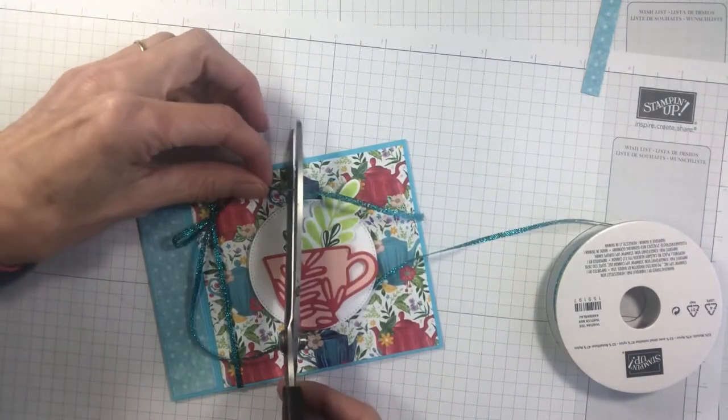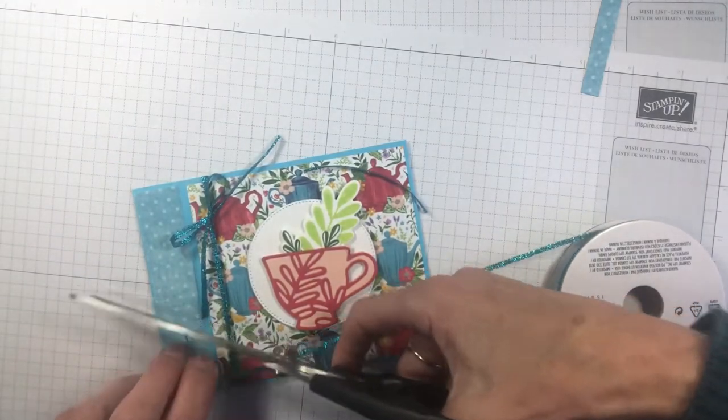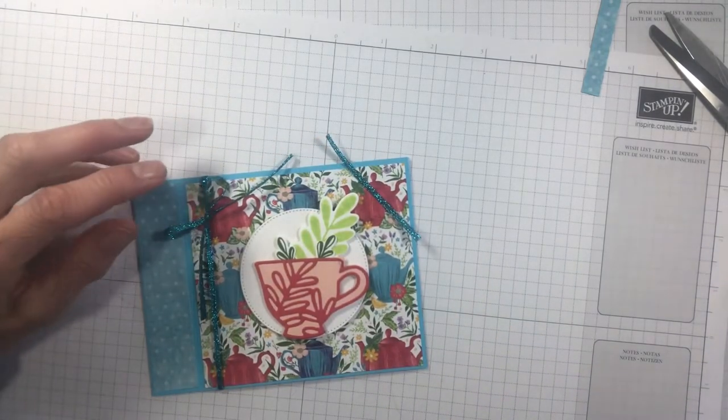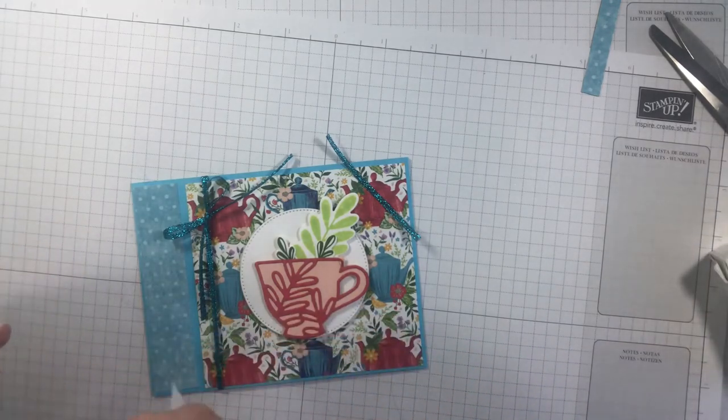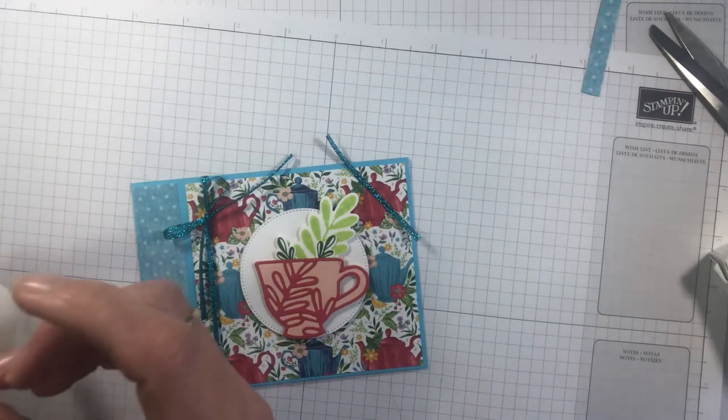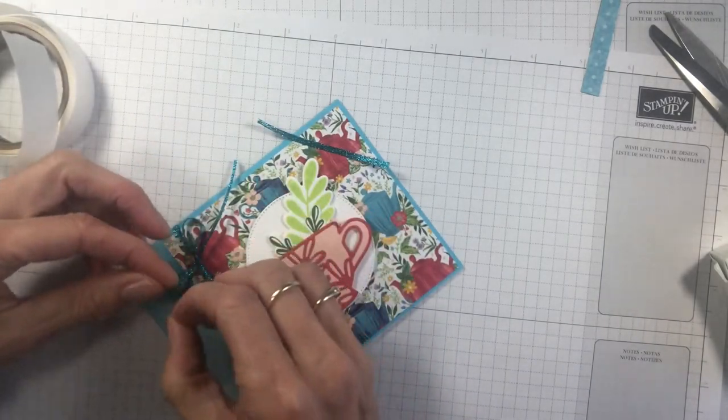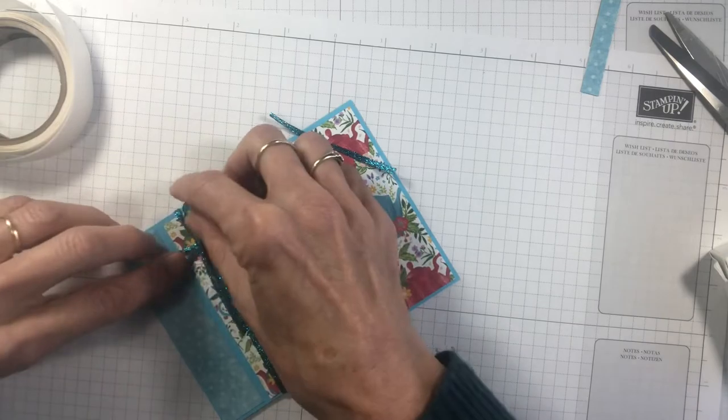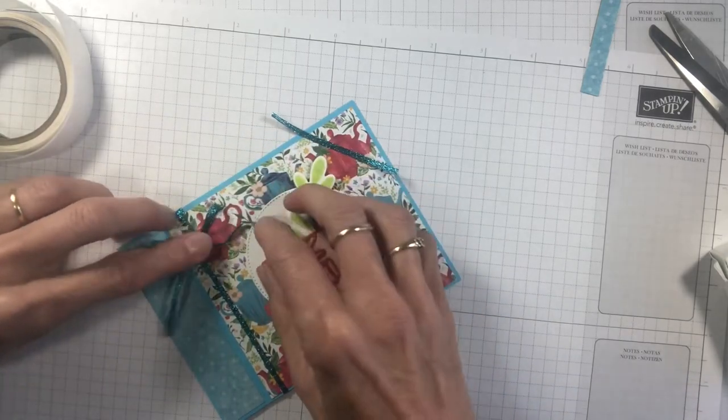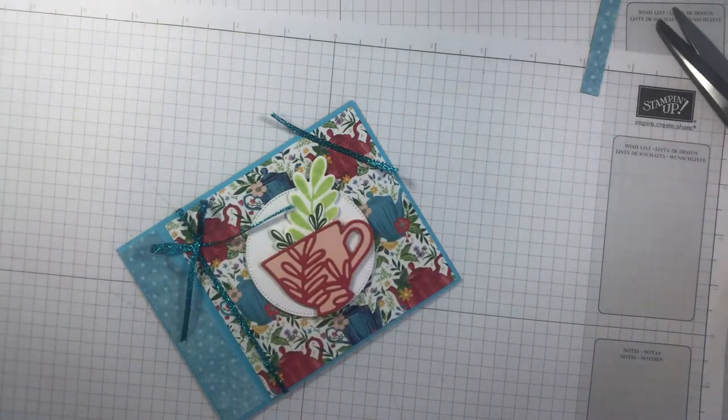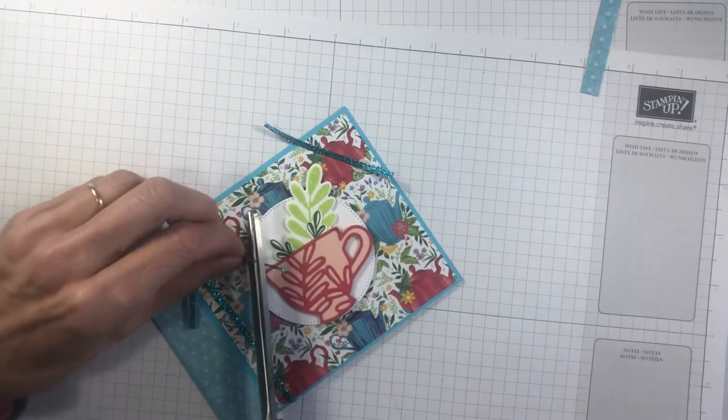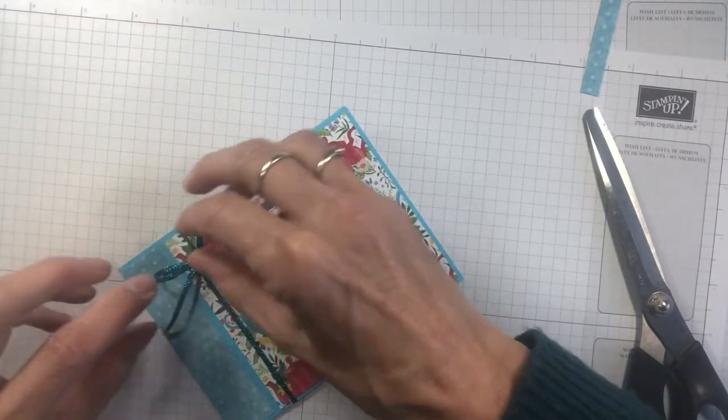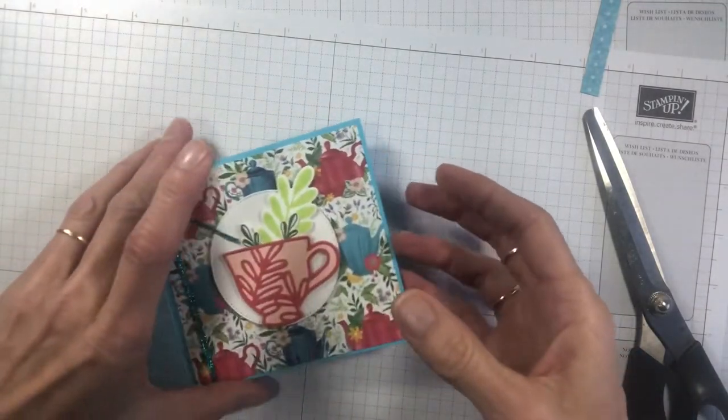I do have an extra bit of length there, but I wasn't going to worry too much about making it too short. You can adjust that. If you find that's too loose, just grab a glue dot and stick that under there, and that will secure that a little bit more from jiggling around.